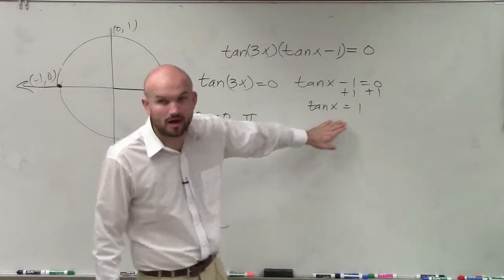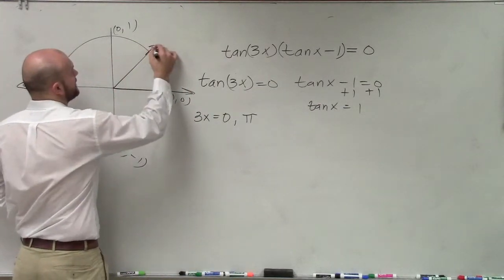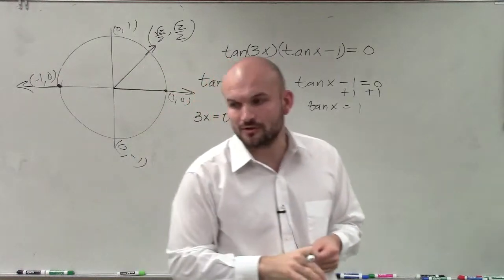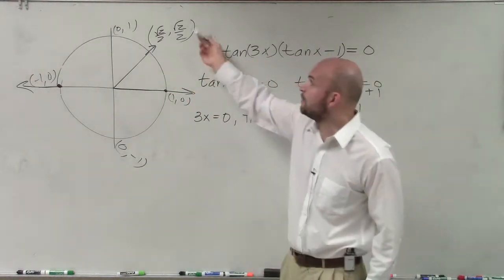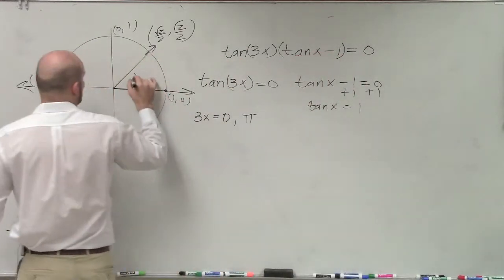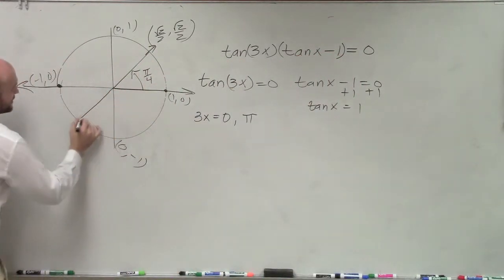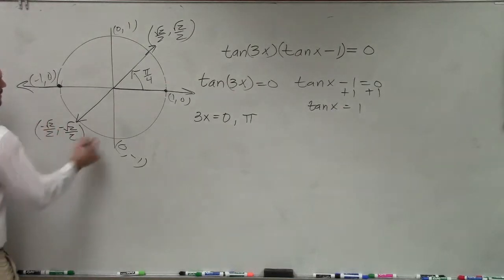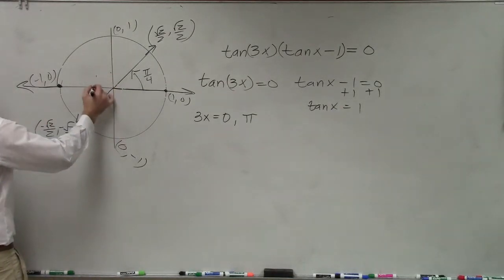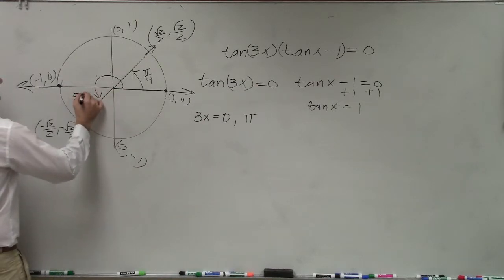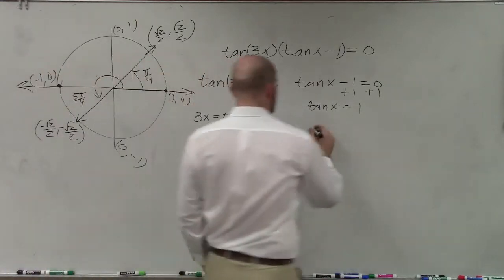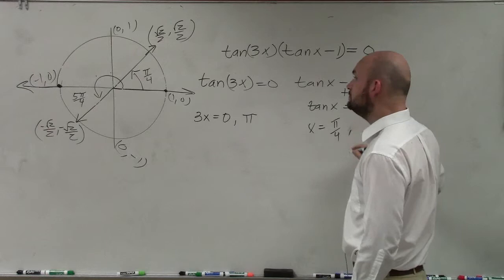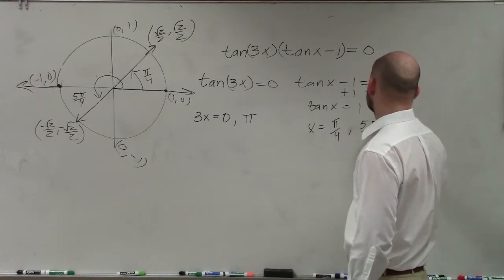For tangent is equal to 1, remember, at this point, we have square root of 2 over 2 comma square root of 2 over 2. We know that they're exactly the same. So if I take the y over the x, I know that's going to equal 1. Remember, that coordinate point is π over 4. And if I look at the direct reflection of that one, that's negative square root of 2 over 2 comma negative square root of 2 over 2. And if that's π over 4, 2π over 4, 3π over 4, 4π over 4, that angle is going to be 5π over 4. So tangent of x, x equals π over 4 and 5π over 4.